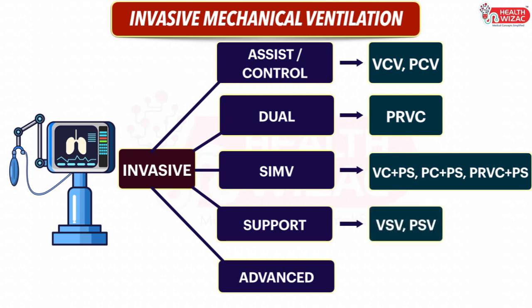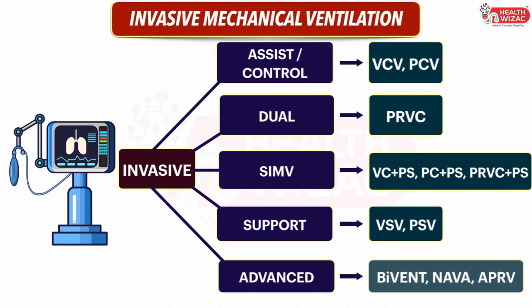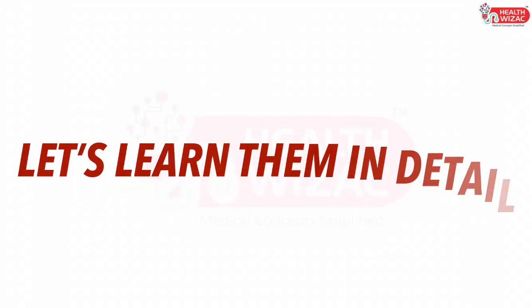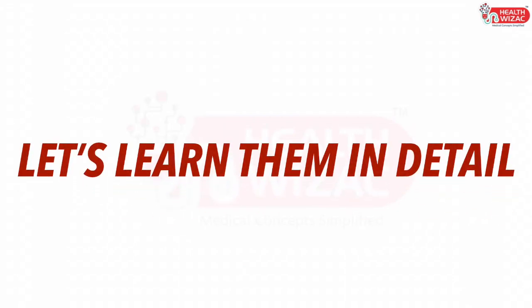Support mode comprises volume support ventilation and pressure support ventilation. Advanced mode comprises Bi-Vent, NAVA mode (Neurally Adjusted Ventilatory Assist), and APRV (Airway Pressure Release Ventilation). Now let's have a look at each one of them in detail.